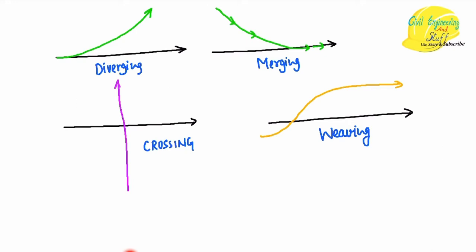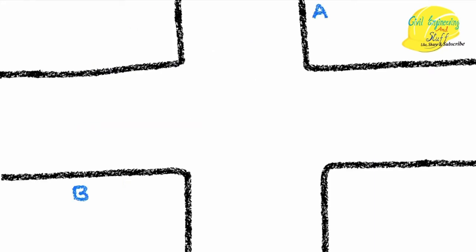Needless to say, among these traffic stream interactions, if a collision happens, the maximum impact will be at the crossing action of traffic. The impact of an accident will be most severe compared to diverging, merging, and weaving actions. Now, when we talk about an uncontrolled intersection — intersection means when two roads cross each other, say Road A and Road B — an uncontrolled intersection means these two roads do not have any traffic managing devices and traffic is free to move as it wants.